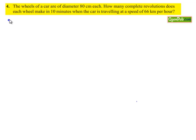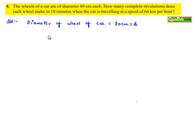Now moving on to the solution. Here the diameter of the wheel of the car is given as 80 cm. Let it be d. Let us convert this into radius — then r is equal to d by 2, which is 80 cm by 2, that is 40 cm.